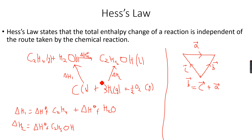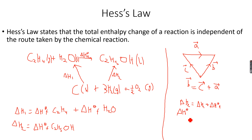If you apply this rule to this Hess cycle, we realize that delta H2 equals delta H1 plus delta H0r. So if we want to calculate delta H0r, we rearrange: delta H0r equals delta H2 minus delta H1, which is equal to the standard enthalpy change of formation of ethanol...